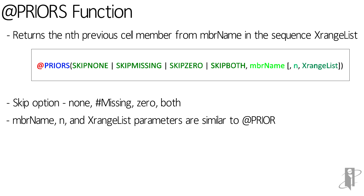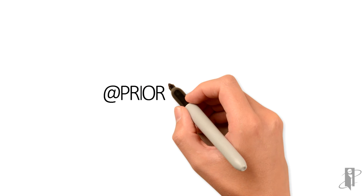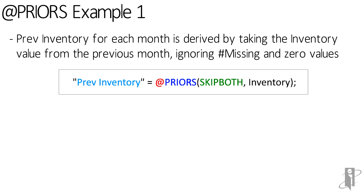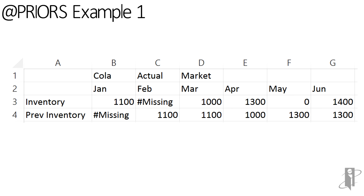In our first example, previous inventory for each month is derived by taking the inventory value from the previous month. The formula for previous inventory is Prior S, Skip Both, for Inventory. The Skip Both option causes the Prior S function to skip both #MISSING and 0 values. Since the n option is not specified, the default value of 1 is used, which provides the next prior member in the range. The X range list is also not specified, so the Prior S function uses the level 0 members from the dimension tagged as time. A sample retrieve shows the previous inventory values for March equal to the inventory value in January, after skipping the #MISSING value in February.